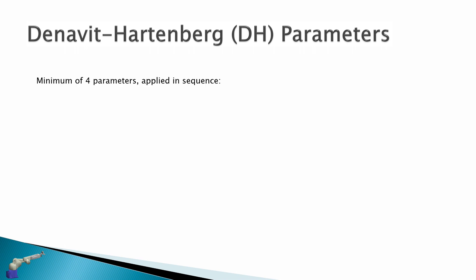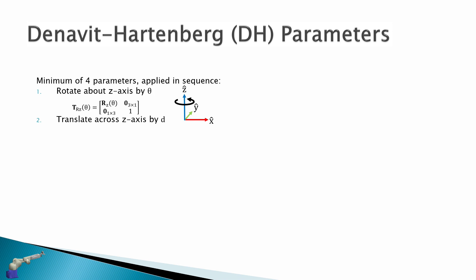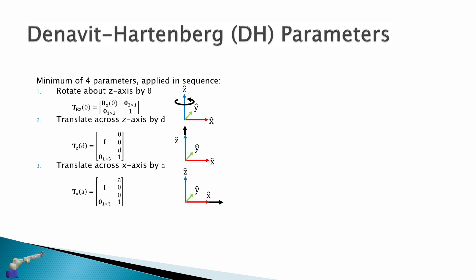We have a minimum number of four parameters applied in sequence. First, we rotate about the z-axis by theta. In our second transform we translate about the z-axis by d, replacing the z component with variable d in the translation vector. Third, we translate across x by variable a, so the x translation component is given by a. And lastly, we rotate about the x-axis by alpha.